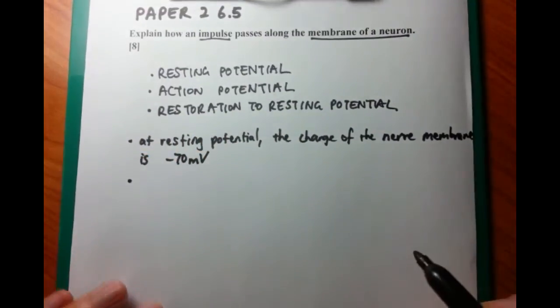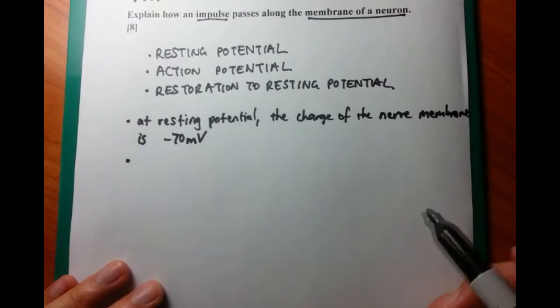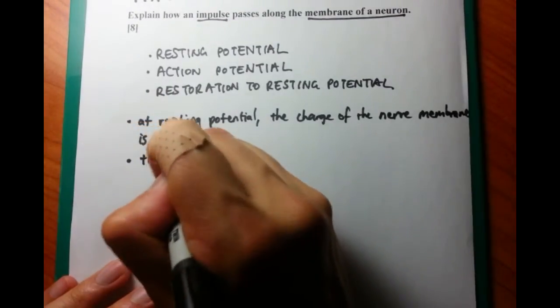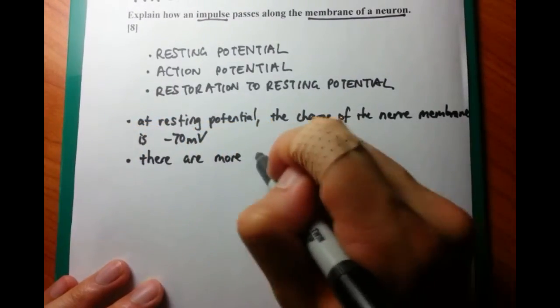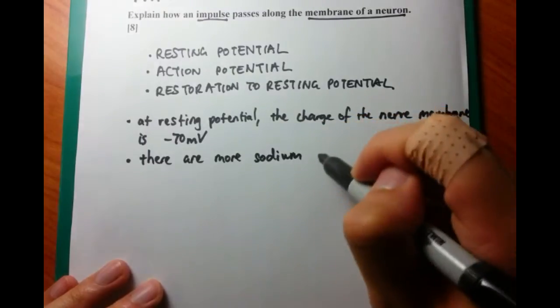And this is what I'm going to write now. So the next two points are just showing that there are more sodium ions on the outside of the nerve cell, and more potassium ions on the inside.